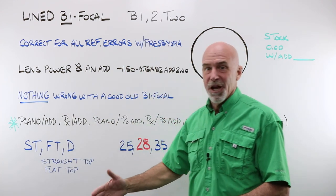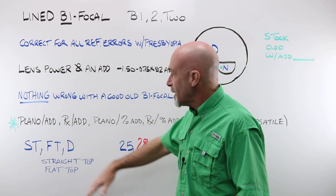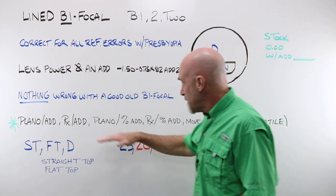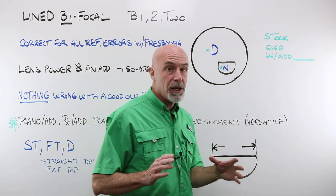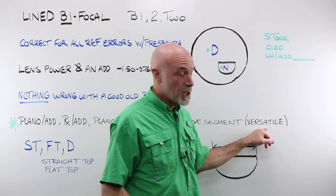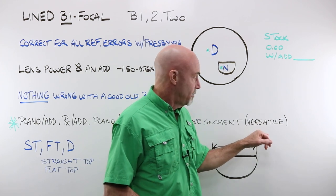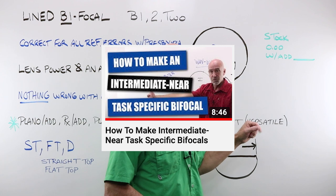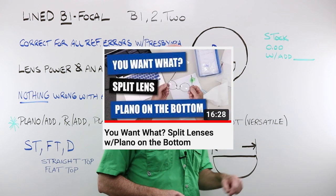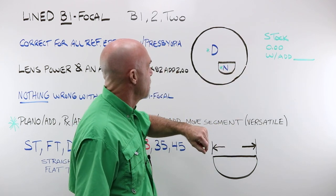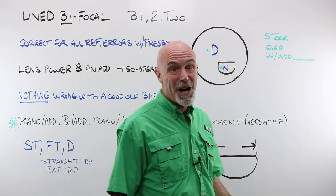There is nothing wrong with a good, old-fashioned bifocal. They can correct for a plano with an add, a prescription with an add, a plano with a percentage of add, a prescription with a percentage of add. You can move this segment around. These are incredibly versatile and generally very inexpensive lenses to work with. There are five videos that talk about how to convert them for different uses. And if you look around out there enough, there are actually some stock planos with specific add power ranges that you can just keep in stock for emergencies.